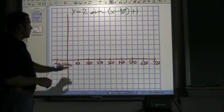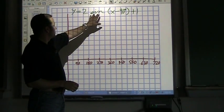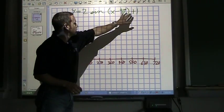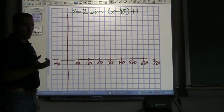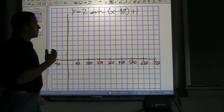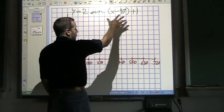All right, here I have y equals 2 sin(x minus 90 degrees) plus 1. And you're going to see in later videos when I graph these a little quicker, what I do is I start on the right hand side and work to the graph.